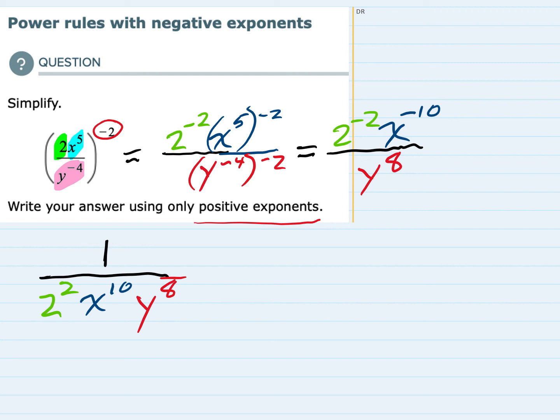And then lastly I can simplify that 2 squared. So I'll rewrite this as 1 over 2 squared is 2 times 2 which is 4, and that x to the 10th and y to the 8th are still in the denominator. So I've simplified this expression.